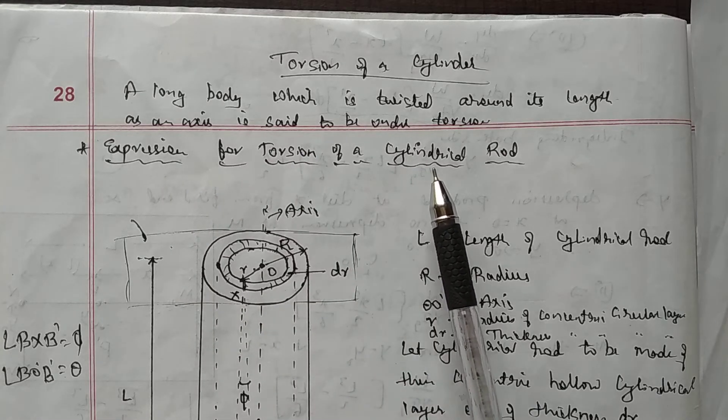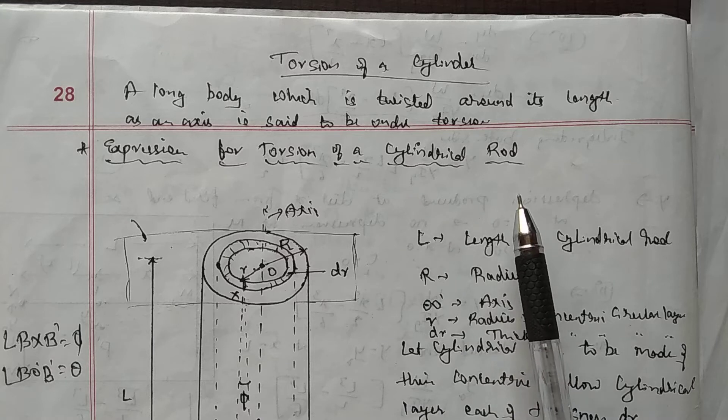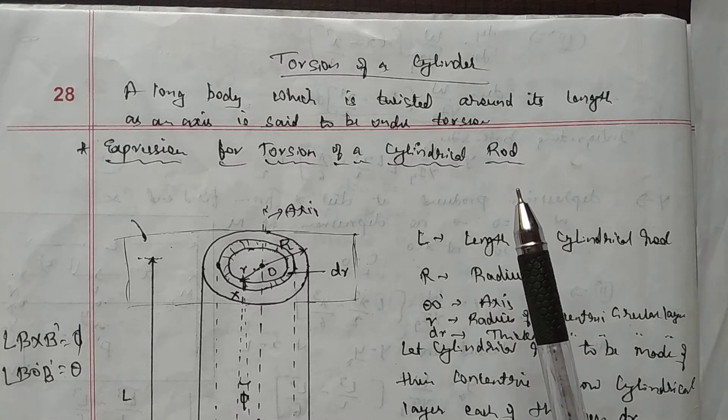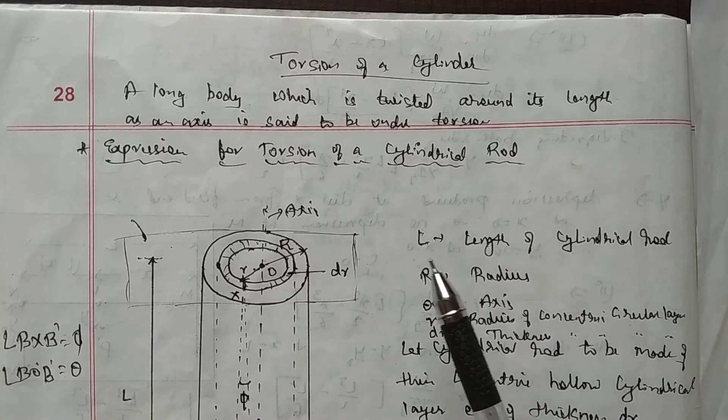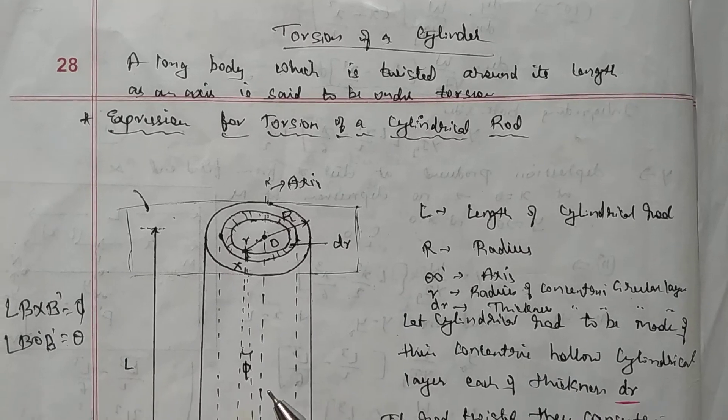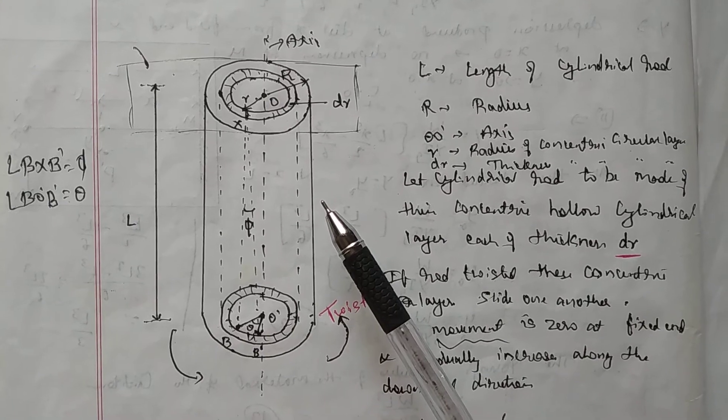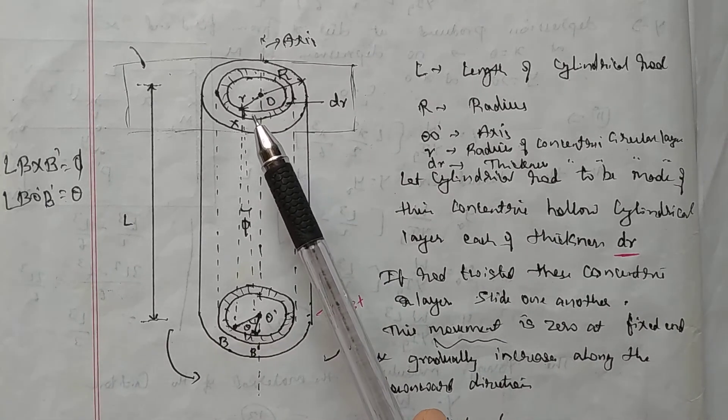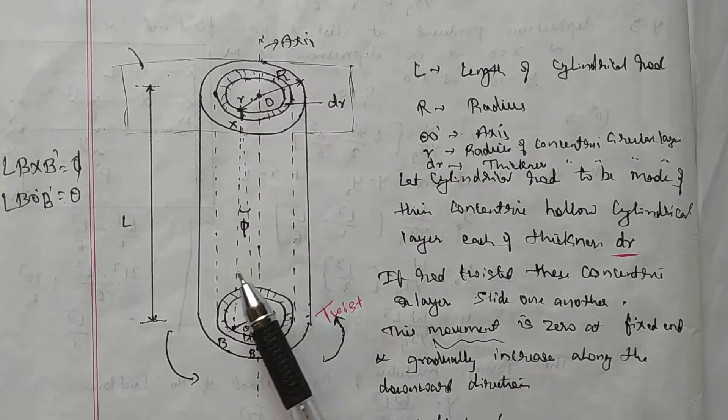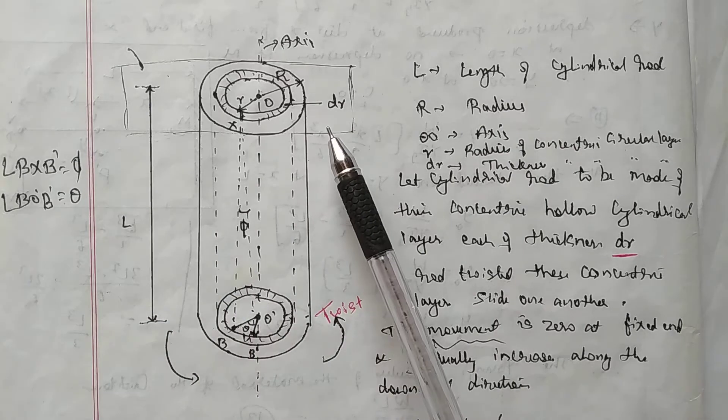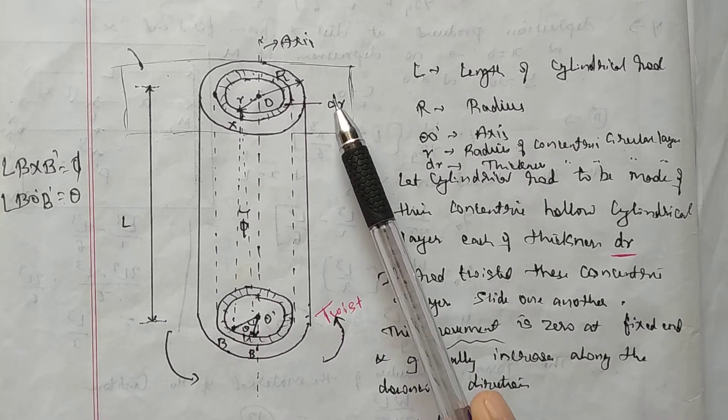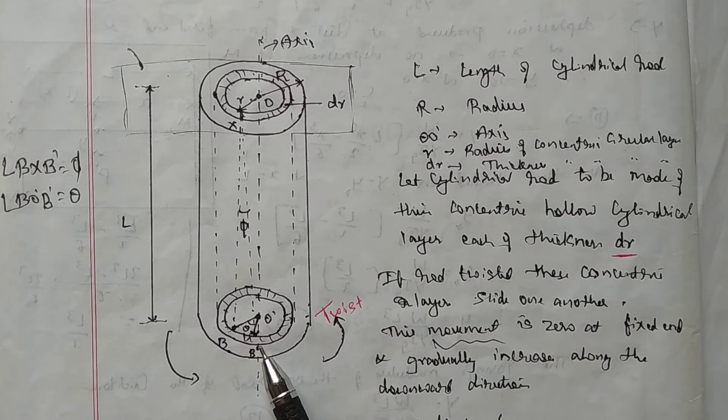Now consider the cylindrical rod as shown here, which is of length L, and one of its ends is fixed and the other end is free.